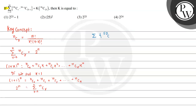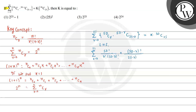We have been given: summation of 50Cr multiplied by (50 minus r)C(25 minus r) equals k times 50C25, and we have to find k. Here r is varying from 0 to 25. Writing the left-hand side: summation where r is varying from 0 to 25 of 50Cr, which equals 50 factorial divided by r factorial multiplied by (50 minus r) factorial, and similarly (50 minus r)C(25 minus r) which is (50 minus r) factorial divided by (25 minus r) factorial multiplied by (50 minus r minus 25 plus r) factorial.